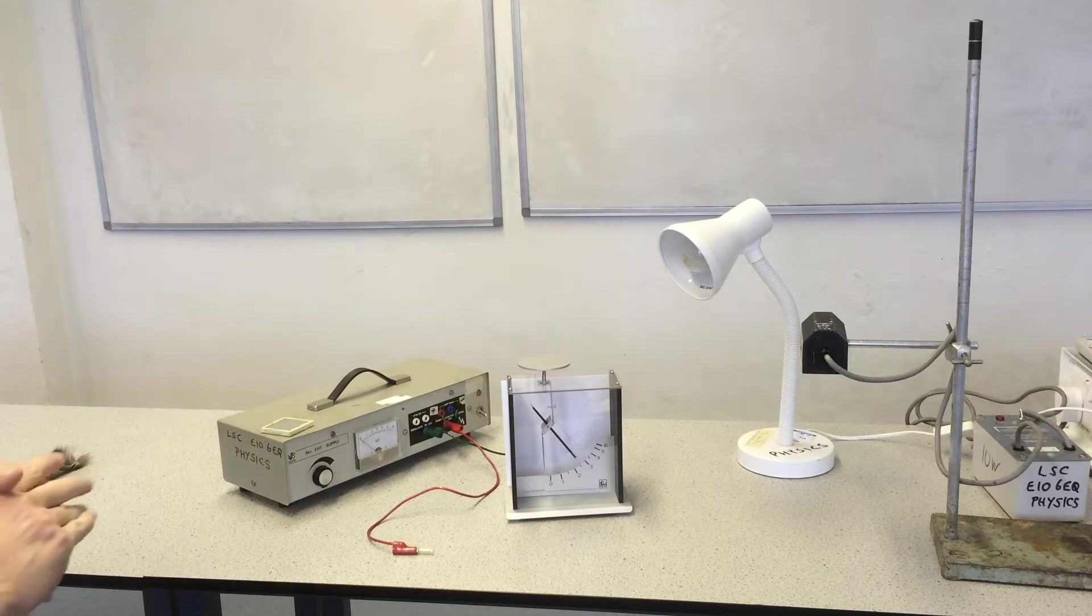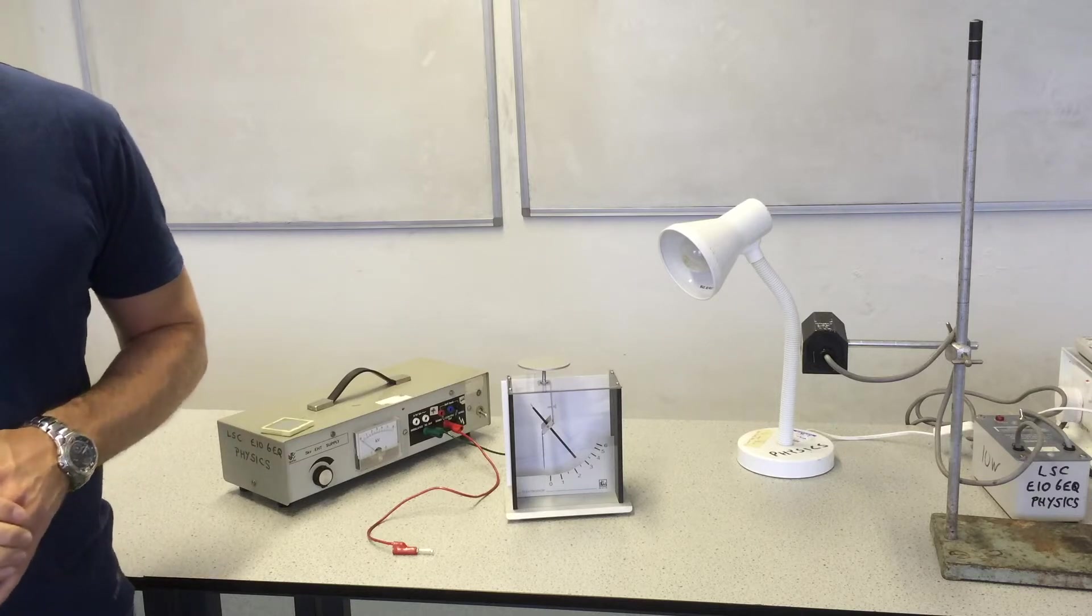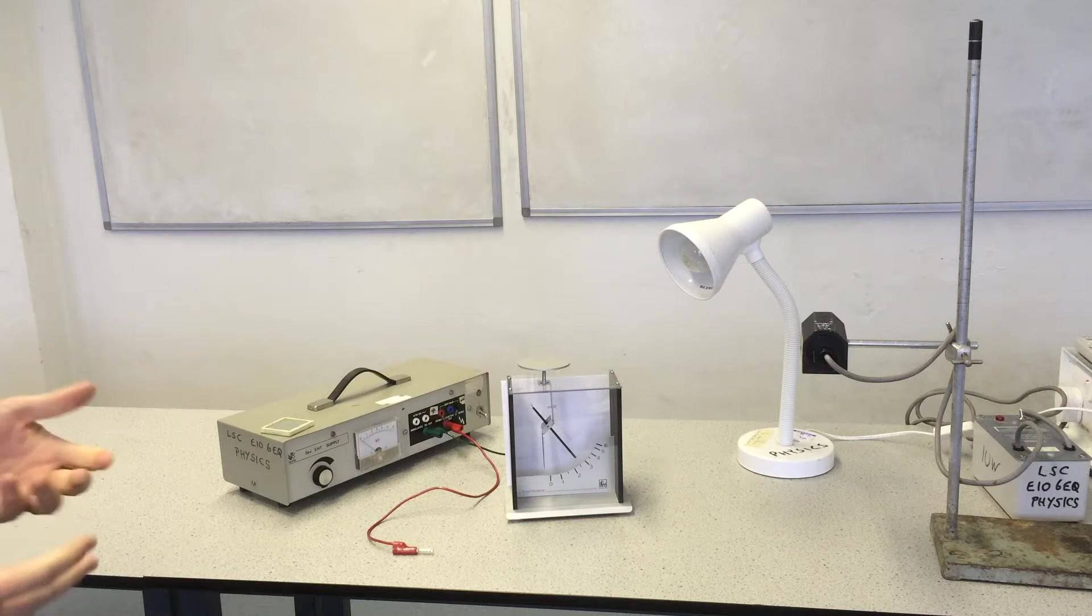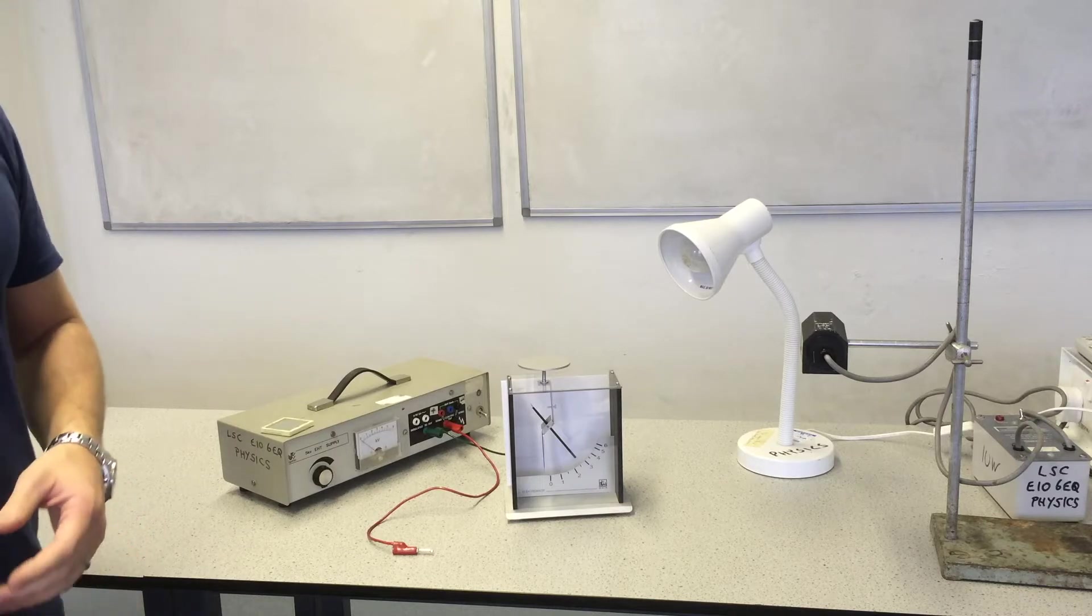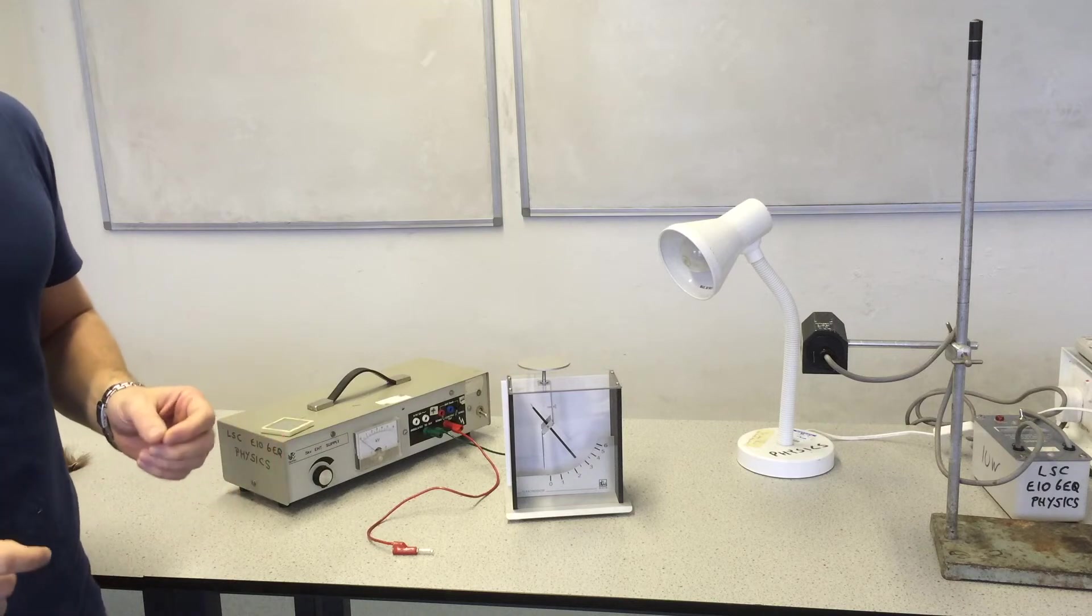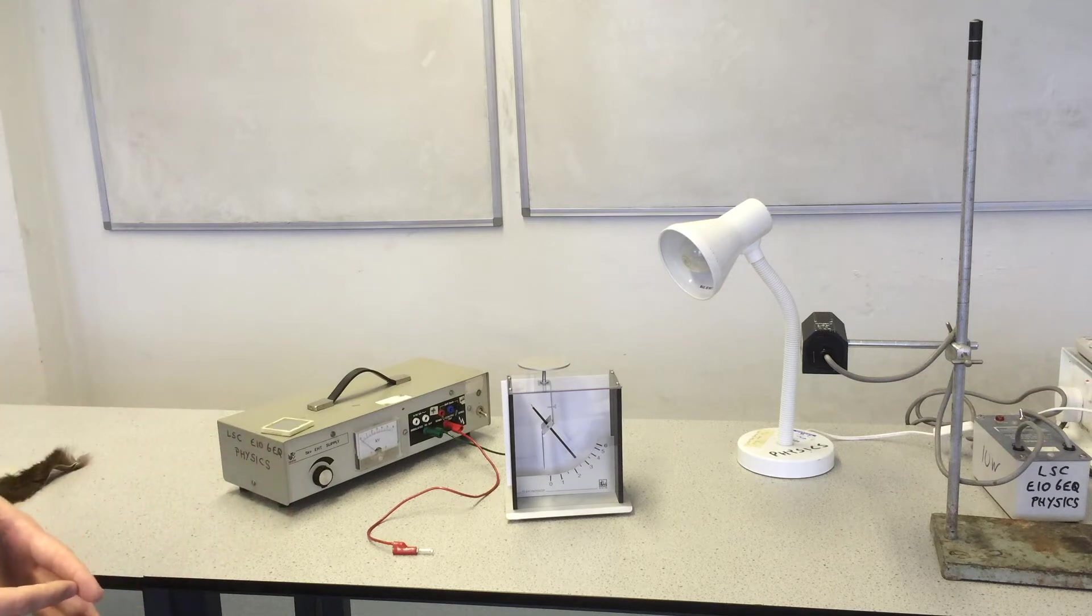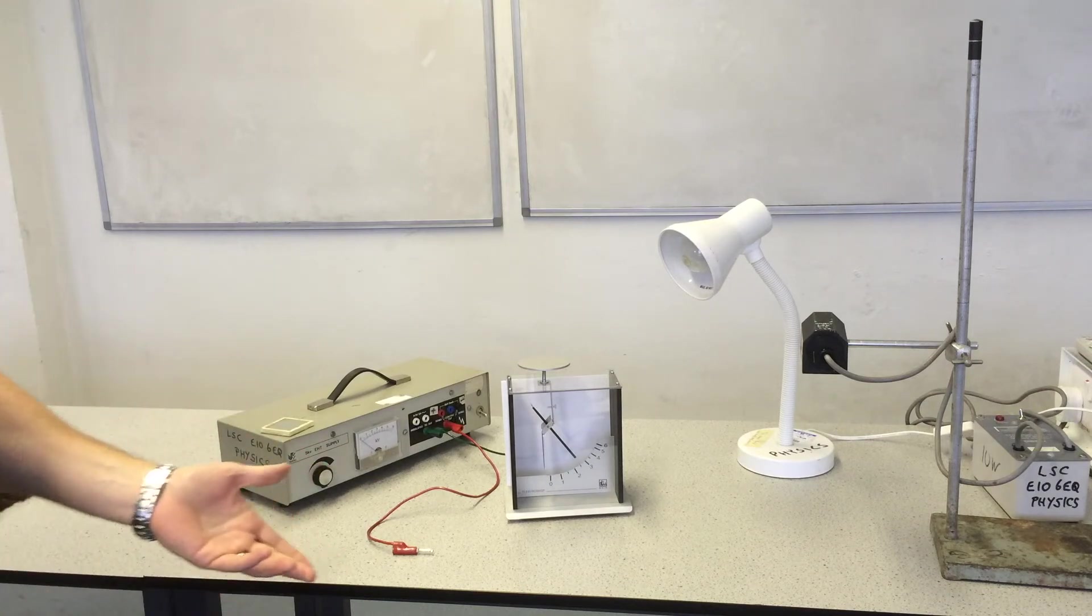The photoelectric effect is the classic proof that light behaves like a particle, and not only light itself, but also electromagnetic radiation on the whole acts like a particle. It's the classic proof of that. So if you take that with Young's double slit experiment, which is the classic proof that light is a wave, what you see is that light or electromagnetic radiation can behave like both. It has a wave-particle duality. So let's go through the experiment and see how wave theory cannot explain this experiment, whereas particle theory can.